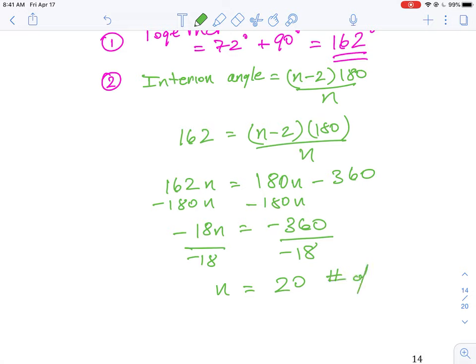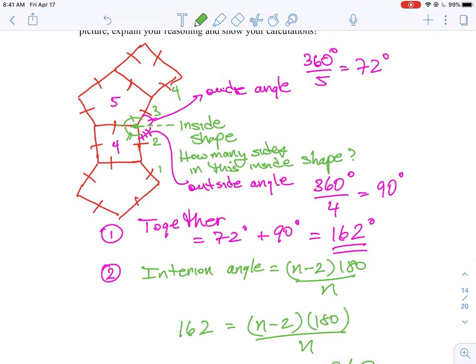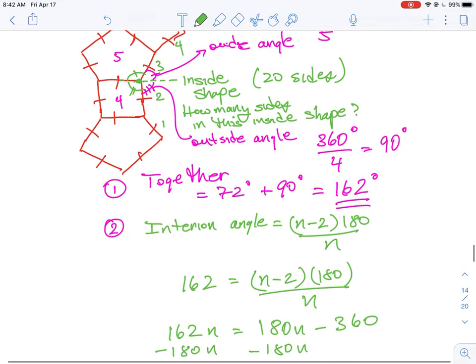This is equal to the number of sides in the inside polygon or tile. So 20 is the answer. The inside shape is going to have 20 sides if we stack all those pentagons and squares together and tile them out into a circle. The inside shape is going to have 20 sides and each angle which is an angle of the inside shape would be 162 degrees.